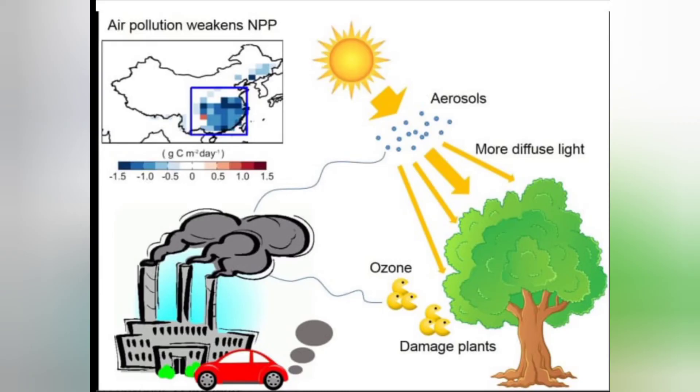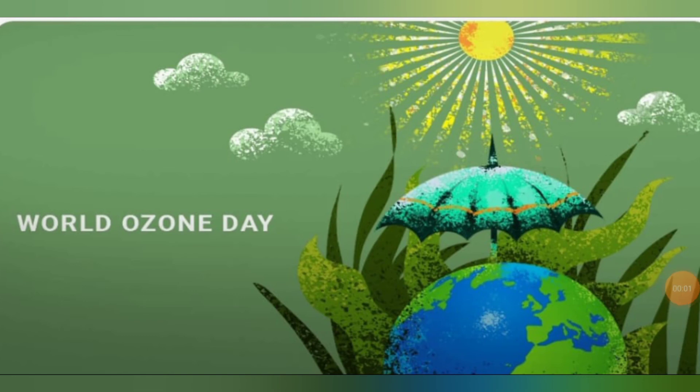Tropospheric ozone may even damage plants. So we have to avoid environmental pollution to save the ozone layer and to avoid ozone pollutants. Remember that ozone is good up high and bad nearby. Thank you. Bye bye.